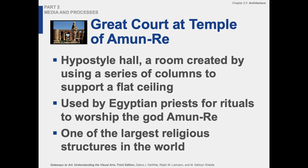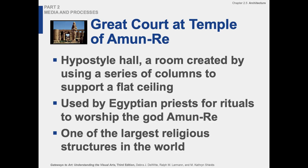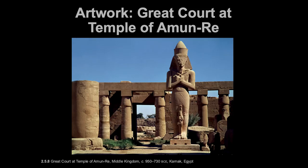This is called the Hypostyle Hall — a room created by using a series of columns to support a flat ceiling. There was a ceiling there that has not survived. In the Colosseum in Rome, about 700 years later, they reconstructed part of it so you can see what it looked like 2,000 years ago. This hall was used by Egyptian priests for rituals and is one of the largest religious structures in the world. In other views you can see multiple rows of columns and a bigger area for gathering.